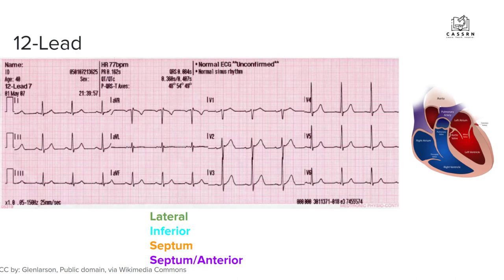This is what a typical 12-lead might look like. Depending on the manufacturer, it might print out a little differently. But essentially you're going to have leads 1, 2, and 3; then AVR, AVL, and AVF; and then V1 through V6. What I was saying is that those arm leads are going to interact with your six other leads and create these other viewpoints. I'm not going to get too much into that — what you need to know is how you're going to read things.